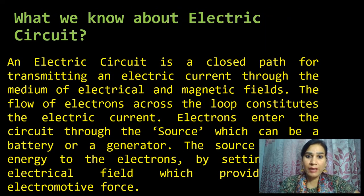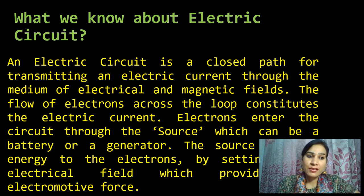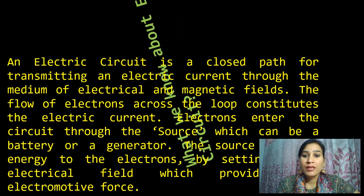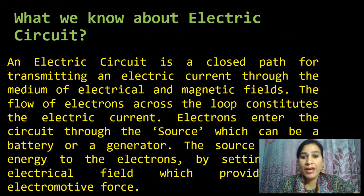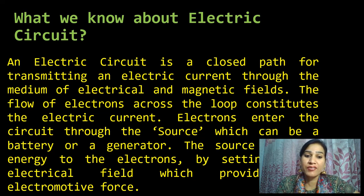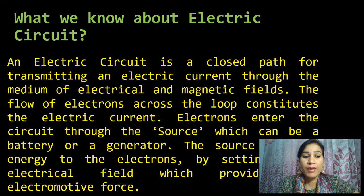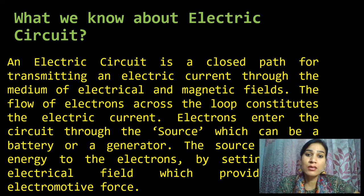Moving to the subject, I am starting with a brief introduction. An electric circuit is a closed path for transmitting an electric current through the medium of electrical and magnetic field. The flow of electrons across the loop constitutes the electric current. Electrons enter the circuit through the source, which can be a battery or a generator. The source provides energy to the electrons by setting up an electrical field, which provides the electromotive force.